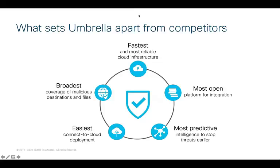Lastly, Umbrella provides the broadest coverage of malicious destinations and files. Not only can we block malicious domains and IPs, but we also have coverage for malicious files attempted to be downloaded from risky domains. This is done through the power of AMP — Advanced Malware Protection — one of our other security products provided with Umbrella in the cloud. I hope this gave you an understanding of what Umbrella is. My colleague Ishan will show you the dashboard shortly, but now let me hand over to David to talk about Meraki in more detail.